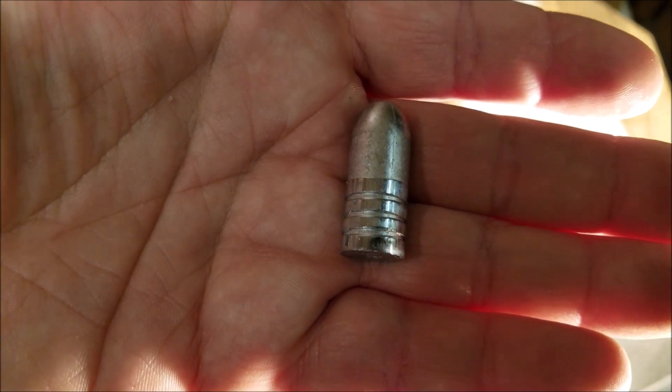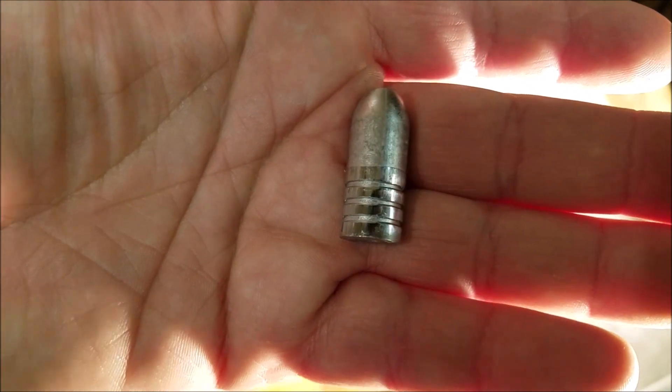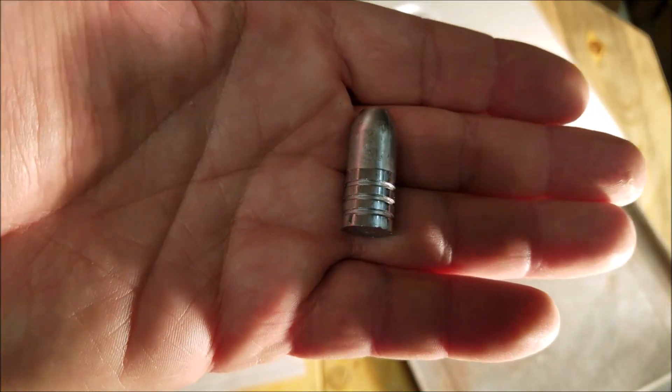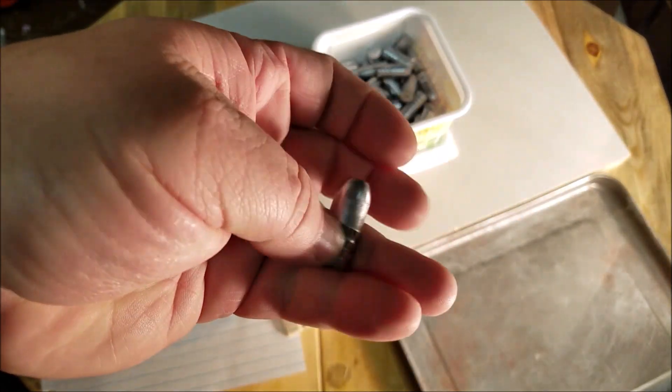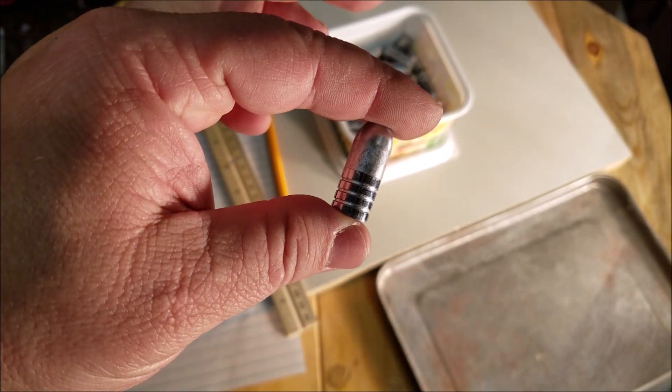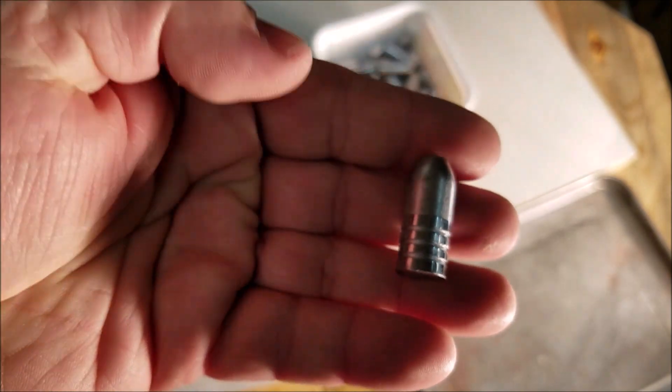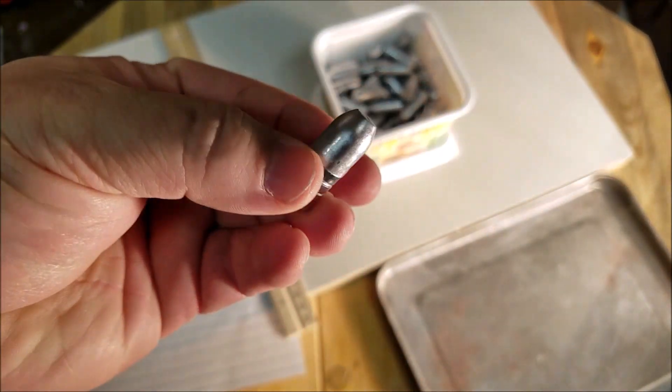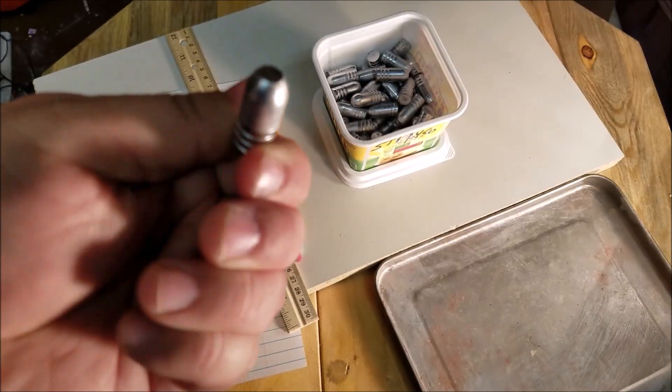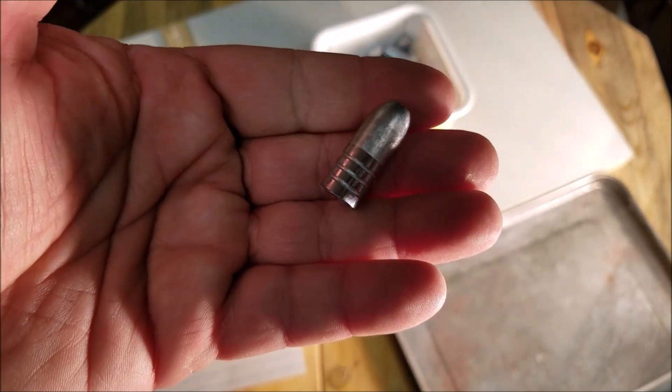The mold was a little oblong, they weren't quite exactly round, so I went ahead and got a 0.457 sizing die and made sure that these are sized properly. These should be a good bullet out of the Martini Henry.